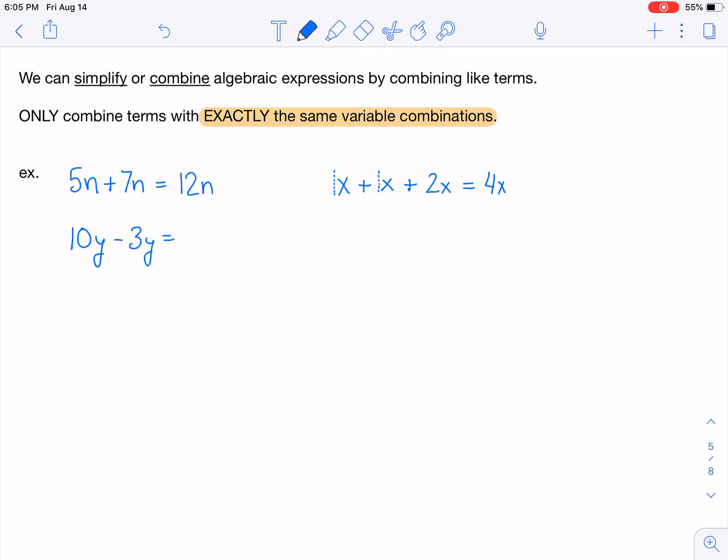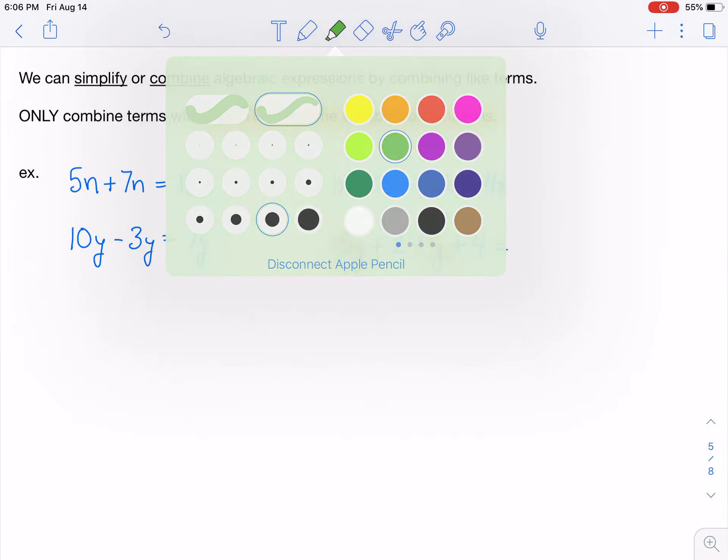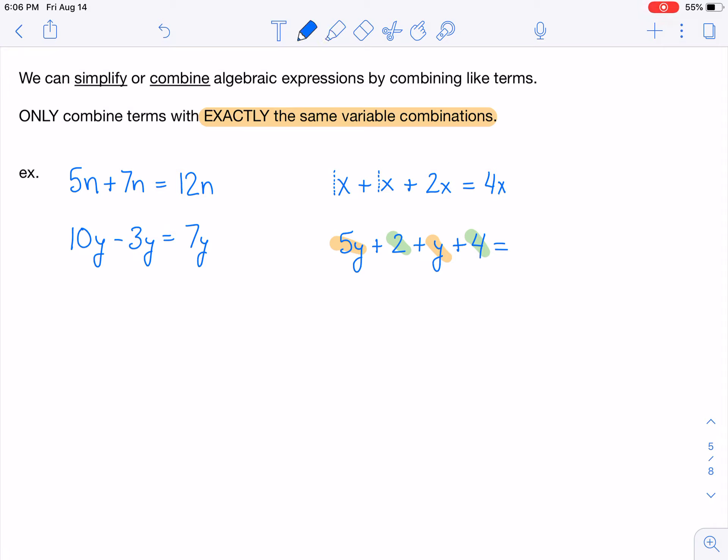And sometimes you have a combination of terms with a variable and terms without a variable. And they're not always next to each other, the ones that should be combined. So here we have two terms that have a y and then two that do not. We can combine the two that do not have the y and we can combine the two that do have the y. Because the orange ones are like terms and the green ones are like terms. So there is that invisible 1 here. So 5y plus 1y is 6y. And 2 plus 4, of course, is 6.